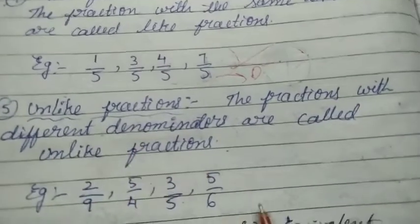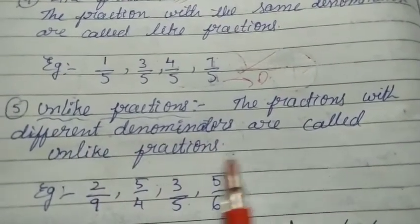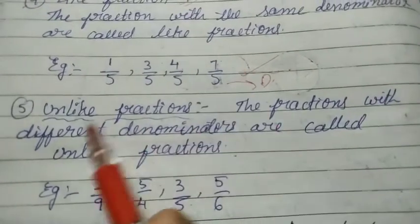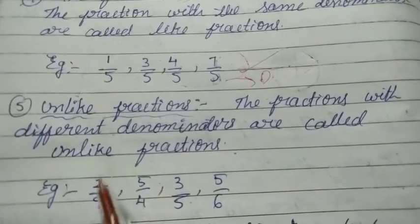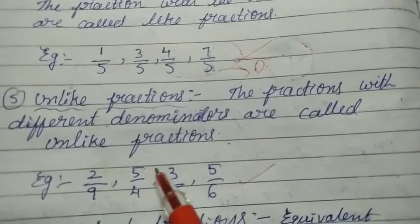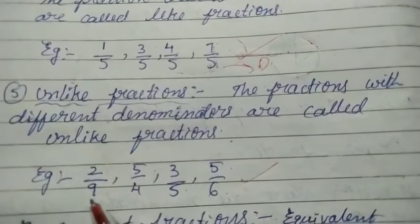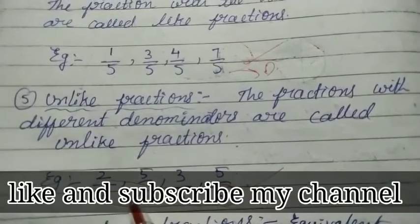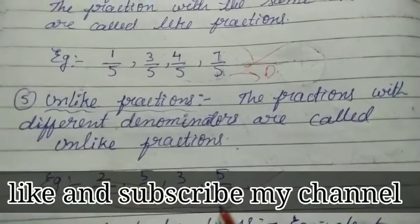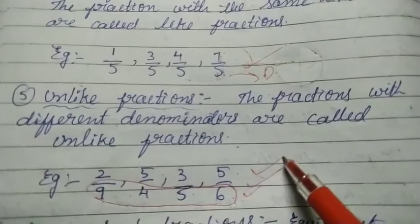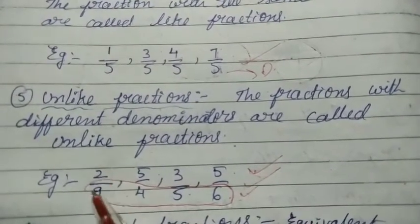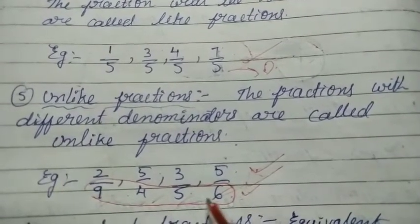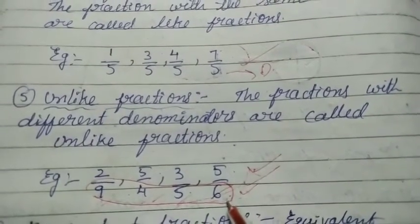The fifth type is unlike fractions. Fractions with different denominators are called unlike fractions. Unlike means different — so in examples like two by nine, five by four, three by five, and five by six, the denominators are all different. These are known as unlike fractions.